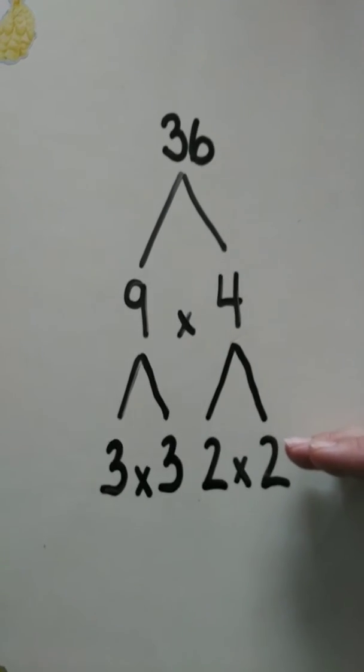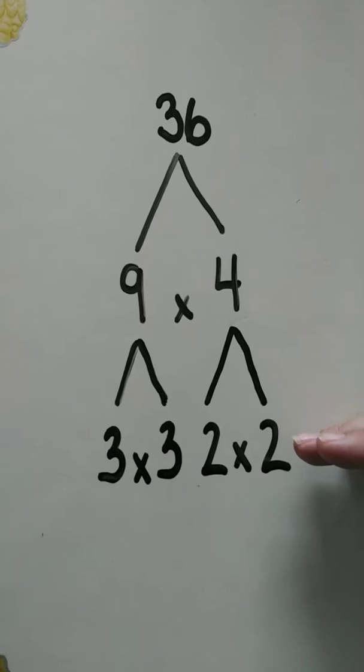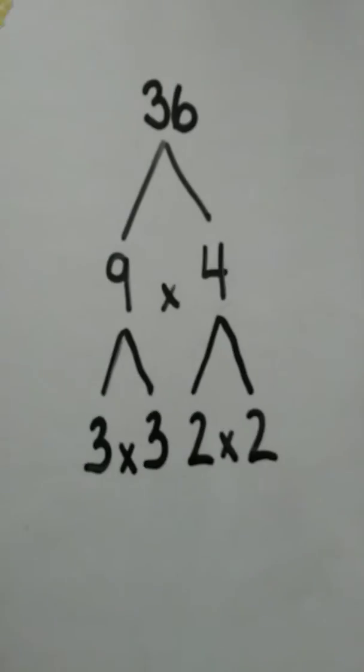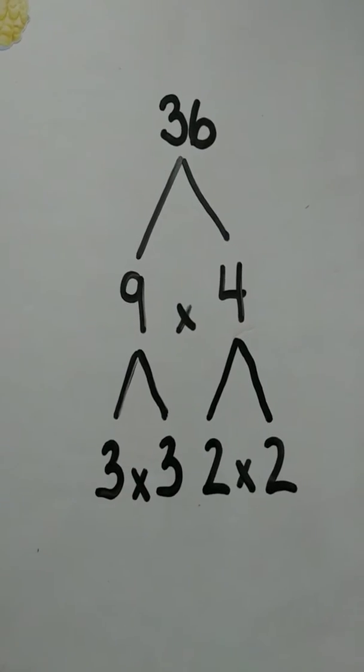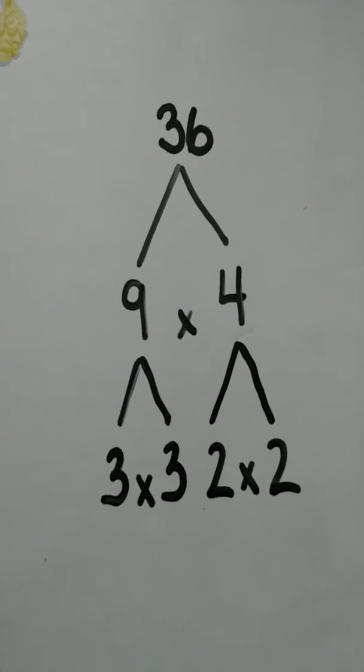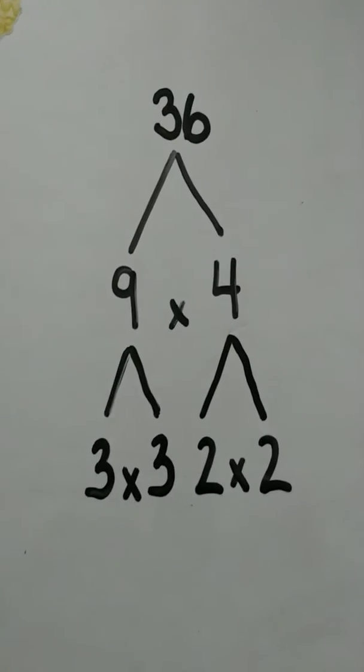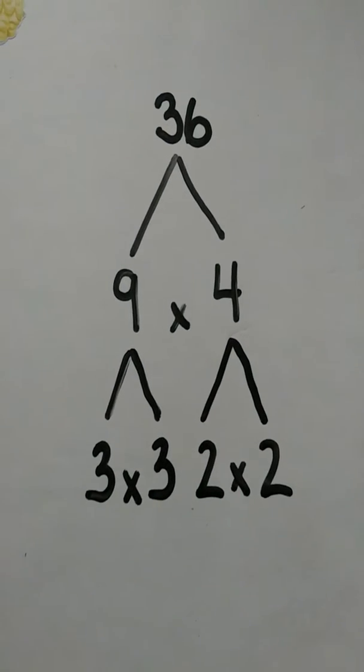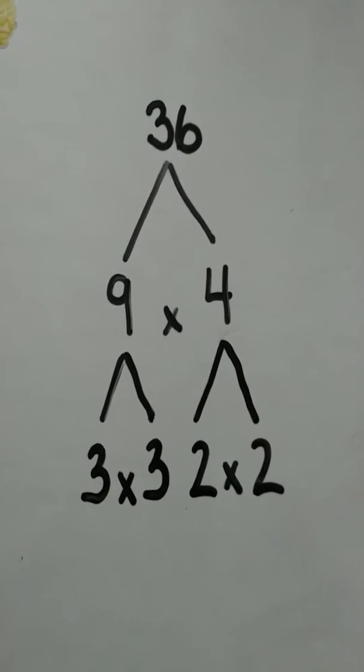And then when we're decomposing the 4 and the 9 again, it always stays on the same line. It's really useful when you're trying to keep your work organized and clear, and it's a lot easier to read your answer in the end when it's all done anyways. So, then we're going to go to the bottom and see what numbers we have left, and if we are going to decompose anything further.